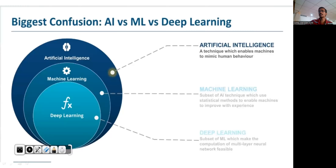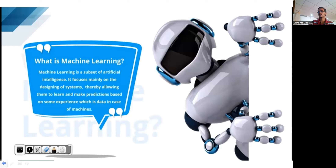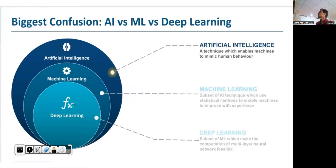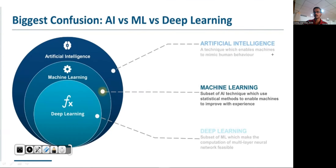Machine learning is a subset of artificial intelligence. It focuses on designing systems, thereby allowing them to learn and make predictions based on some experience. Now let us see some differences between artificial intelligence, machine learning, and deep learning. Artificial intelligence is a technique which enables machines to mimic human behavior. We can also try to understand the Turing test in this context.